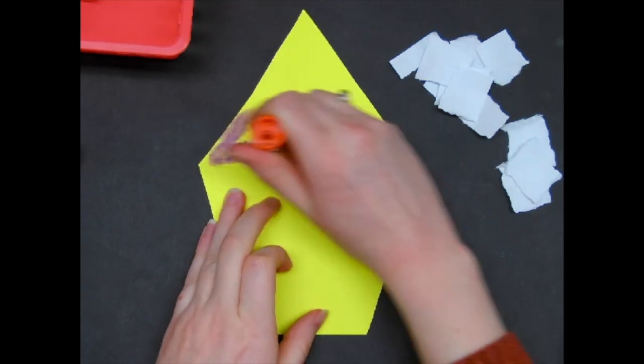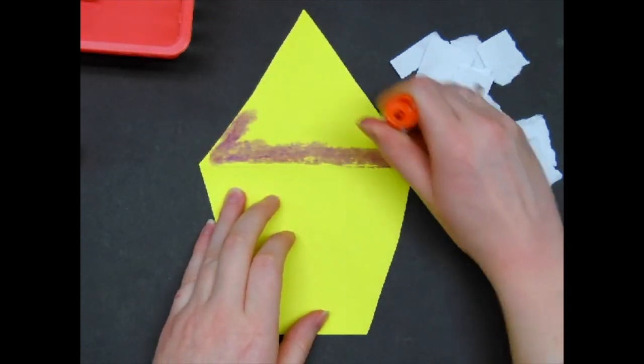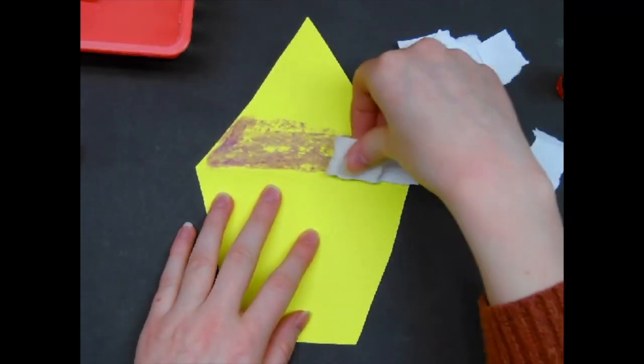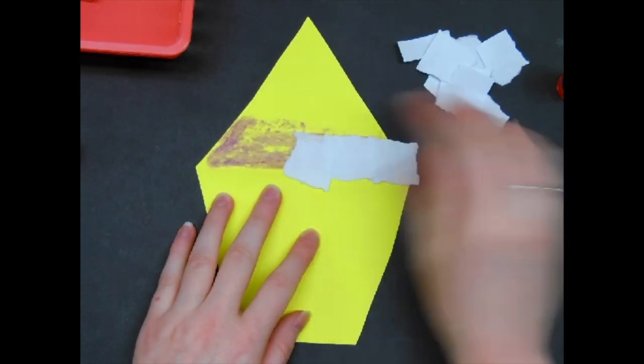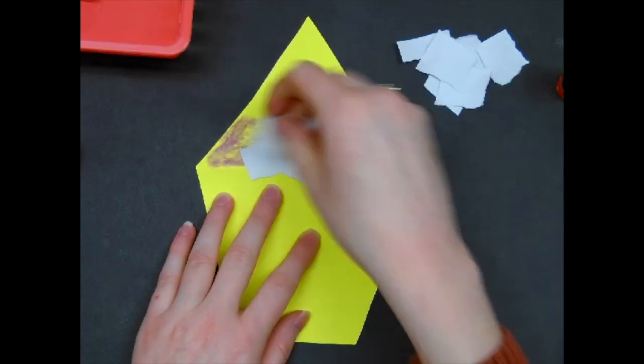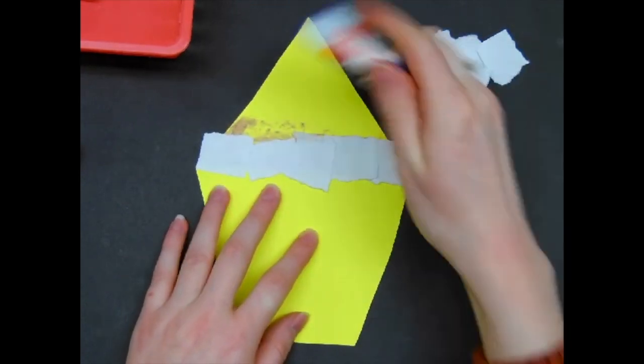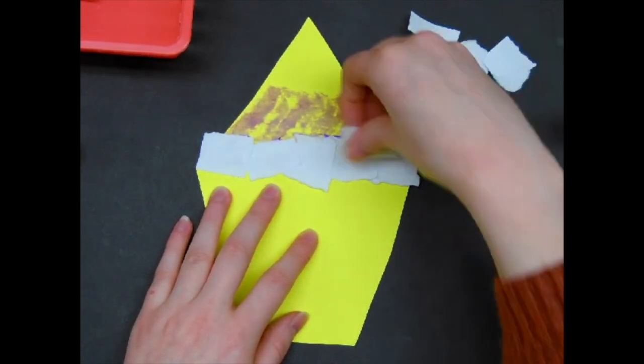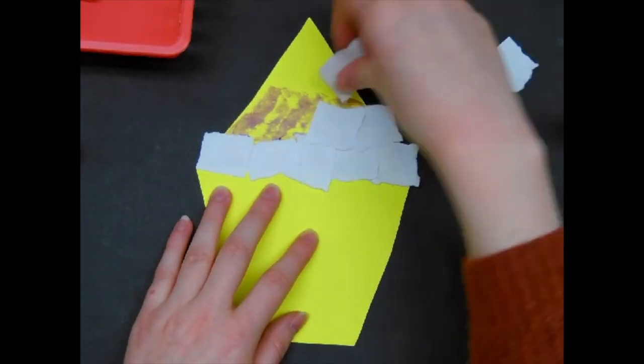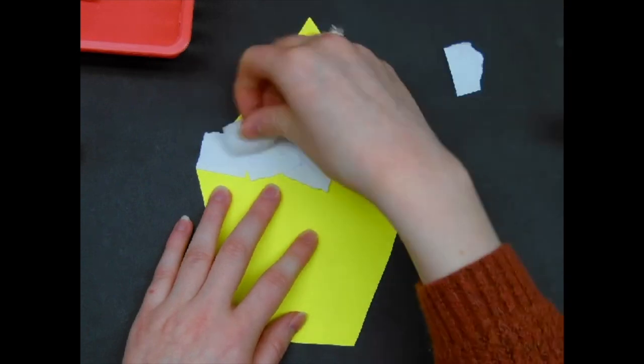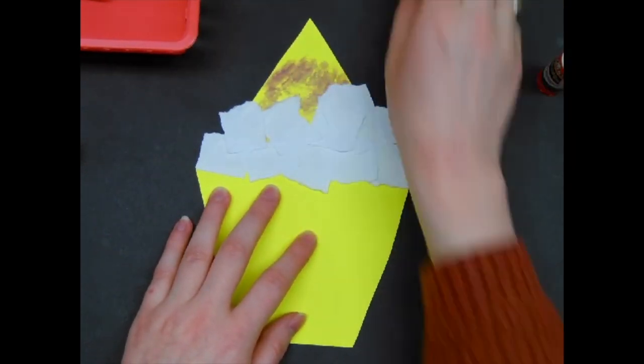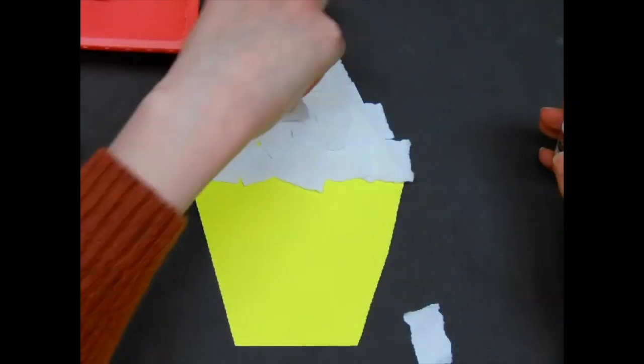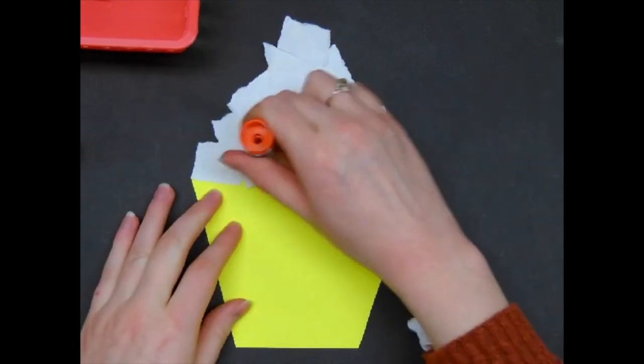When you're doing this, I would start near the bottom of the triangle and work your way to the top. Put some glue on and then stick down some of your icing. It's okay if it goes past or outside. It'll just make it look like it's super fluffy. Put some more glue and keep going until you've covered the whole thing. If you miss any spots, you can go back and add some more.